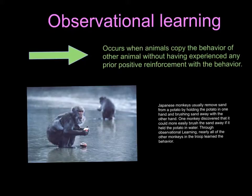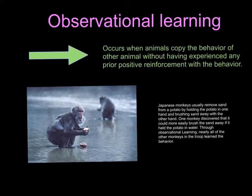Observational learning occurs when an animal copies the behavior of another animal without having experienced any prior positive reinforcement with the behavior. Japanese monkeys, for example, would remove sand from a potato by holding the potato in one hand and brushing the sand away with the other hand. Then one monkey discovered it could be more easily cleaned if the potato was held in water. Through observational learning, nearly all the monkeys did the same thing. The cool thing is they learned this all by themselves — they're not getting rewarded, so you can tell they're pretty smart.